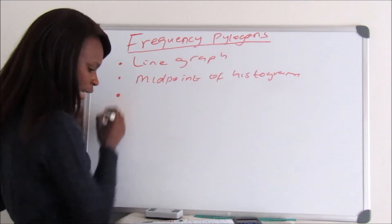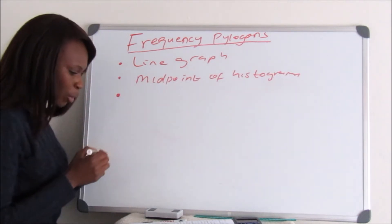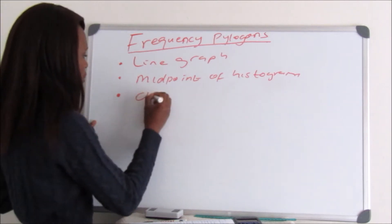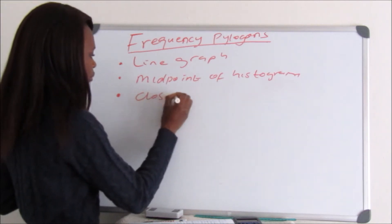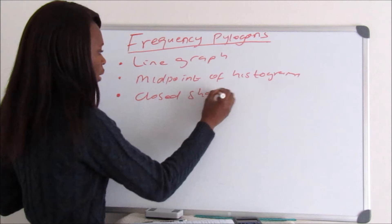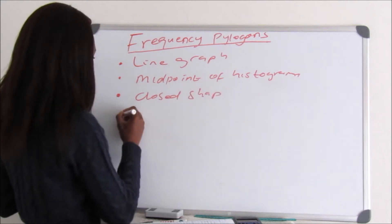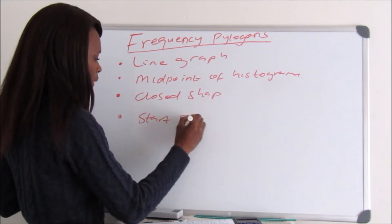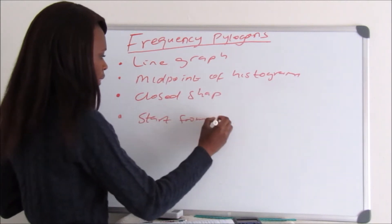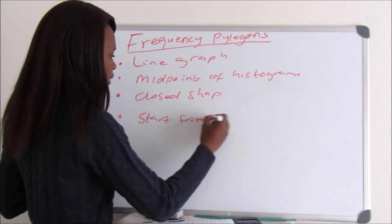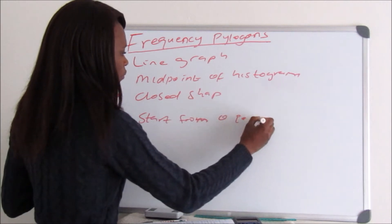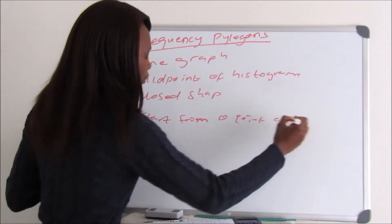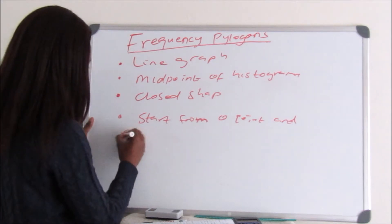The third point about a frequency polygon is that it must be a closed shape. That means it should start from a zero point on the axis and end up at the axis again.